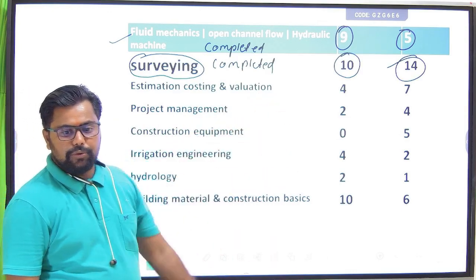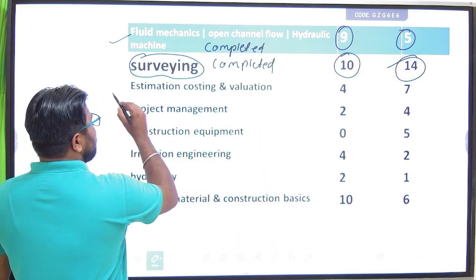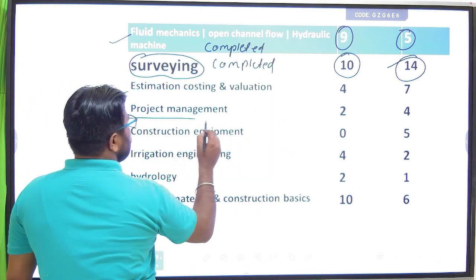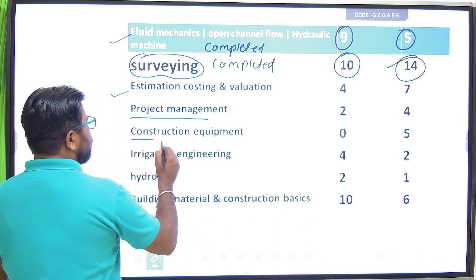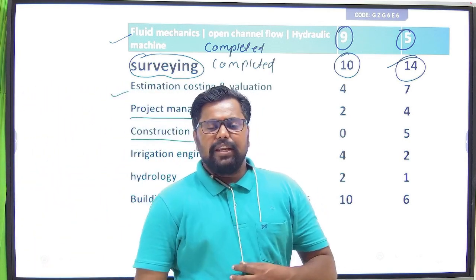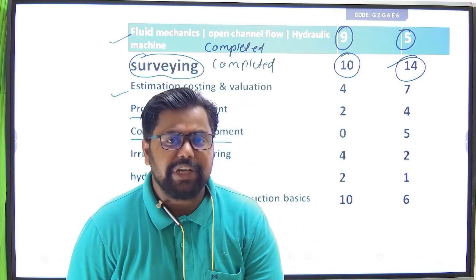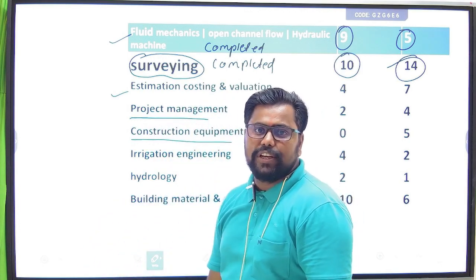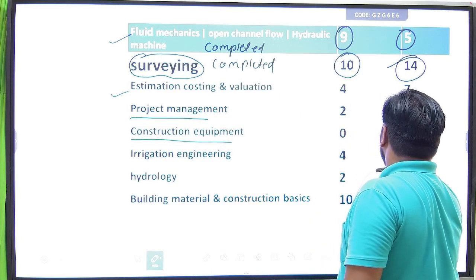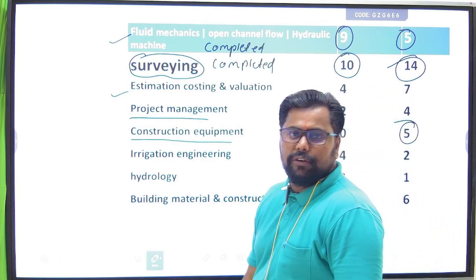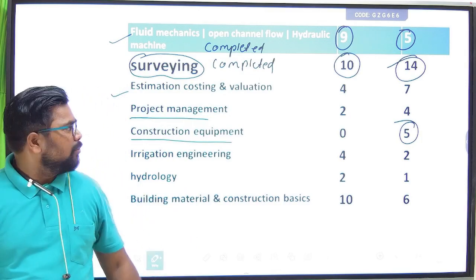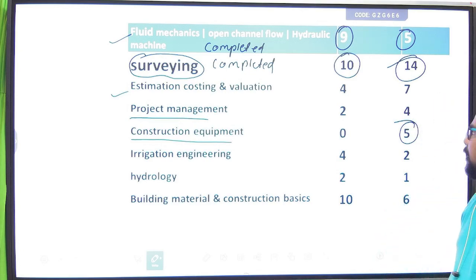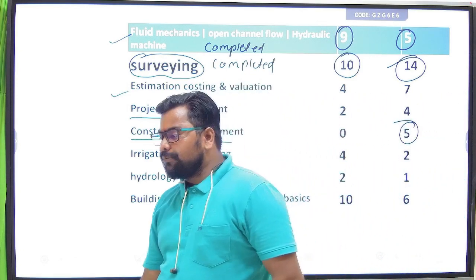Next, weightage account 2014 — this is a big weightage subject. Estimation, Costing and Valuation, Project Management, Construction and Equipment. The first paper was cancelled; the first question was about construction equipment, but the next examination was also about construction equipment. Construction equipment is good and important. Building materials and Environment Engineering are important.